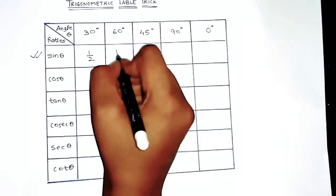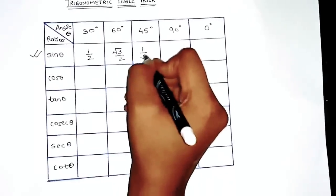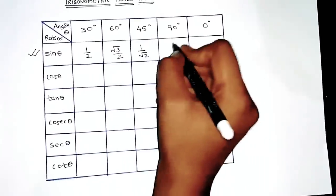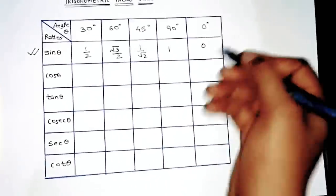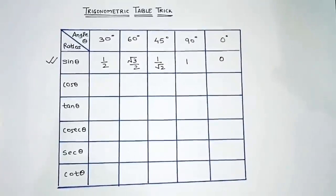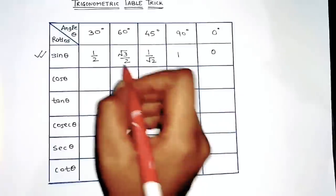Okay, the ratio: see, sine 30 is 1/2, sine 60 is √3/2, sine 45 is 1/√2. This you will have to memorize. Sine 90 is 1, sine 0 is 0.